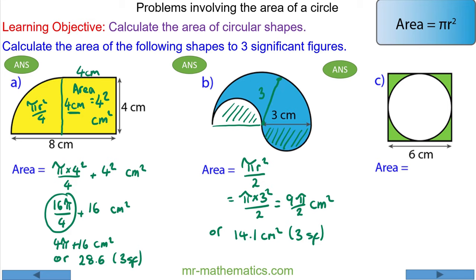For question c we're going to calculate the area of the green region. We can calculate this as the difference between the area of the 6 by 6 square and the area of the inscribed circle, which has a diameter of 6 and a radius of 3 because the radius is half the diameter.